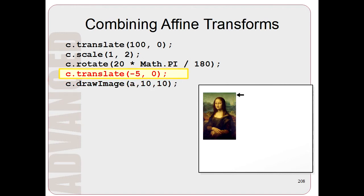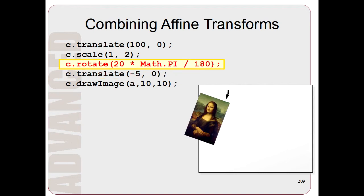Here we translate or remove an image by minus 5. So we push the image to the left by 5 pixels.